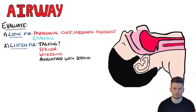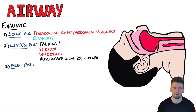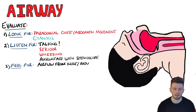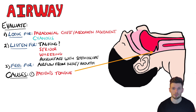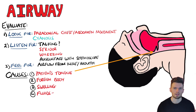If you hear nothing, you'll either have to try and hear the breath sounds using a stethoscope, or try and feel for it by putting your hand or ear next to the patient's nose or mouth and feeling for the airflow. Causes of airway obstruction include the patient's tongue, a foreign body, swelling, and fluids such as vomit or blood.